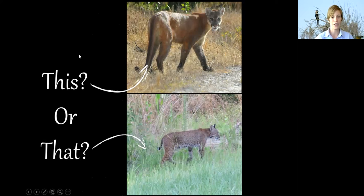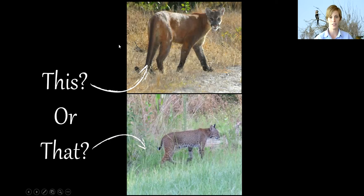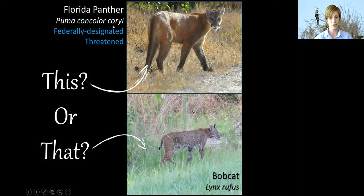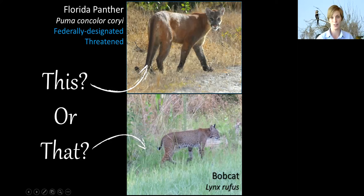Now we'll look at our first mammal species comparison. Some might say it's obvious which is which, but we quite often get people who report panther sightings that are often misidentified as a bobcat. The Florida panther is federally designated as threatened, so it's very rare — I've personally never seen one in the wild. Compared to the bobcat, which is much more common, though both are mostly nocturnal and active at night, which reduces our chances of seeing them.